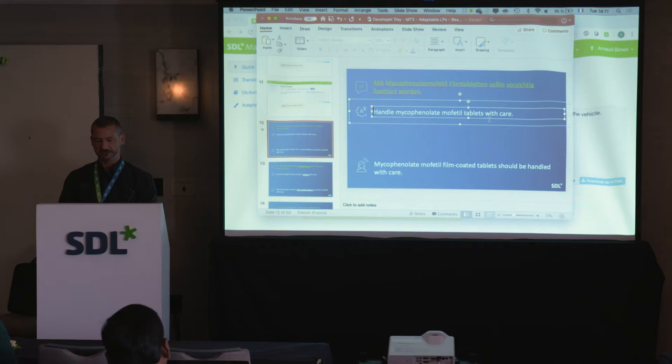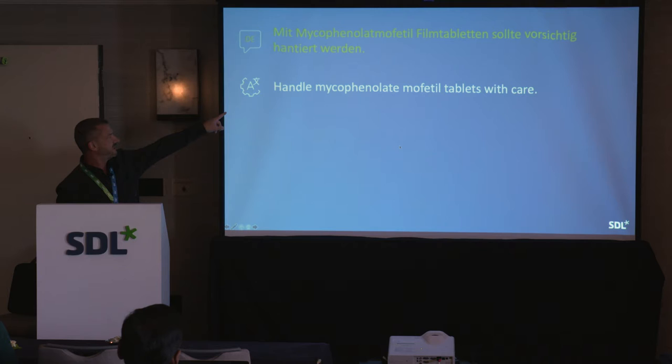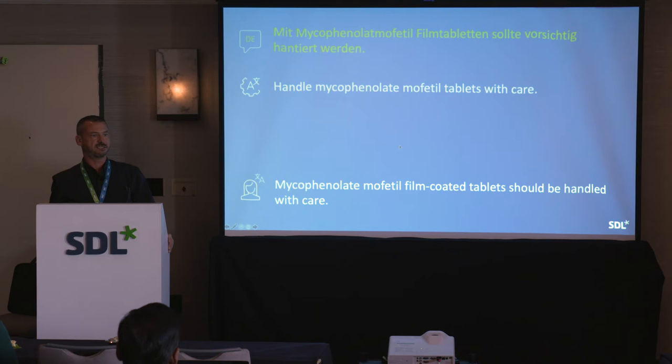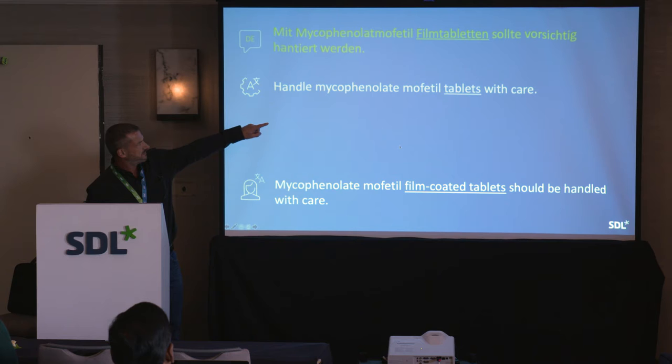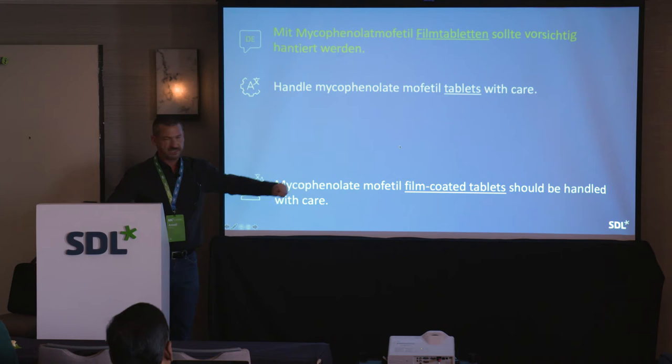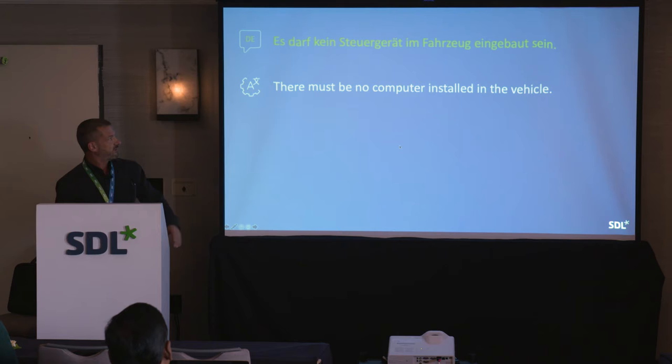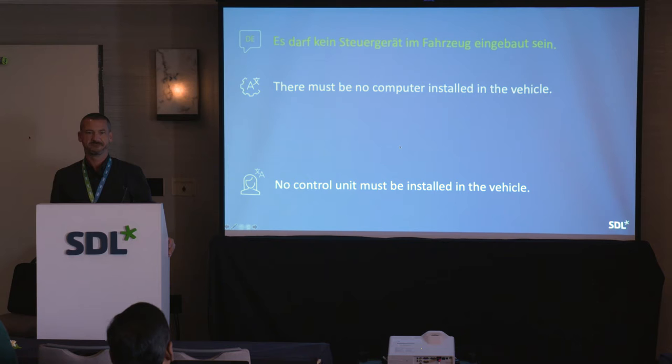These are the results from the generic engine. Looking at the pharmaceutical sentence, a human translator would translate 'film tabletten' as 'film coated tablets,' which is different from the generic output. For the automotive sample, the generic engine translates 'Steuergerät' as 'computer,' but a human translator would use 'control unit' — that's how it's referred to in the automotive industry.